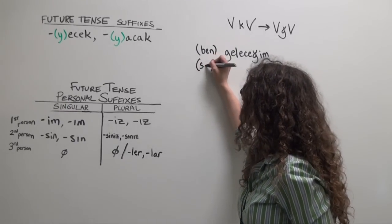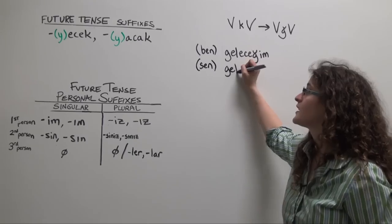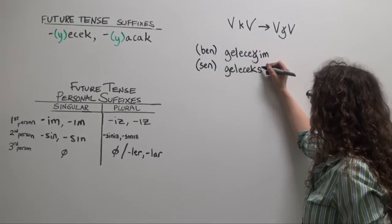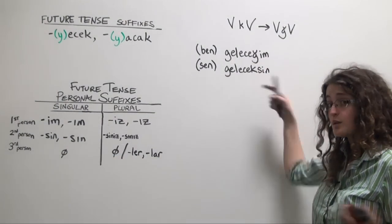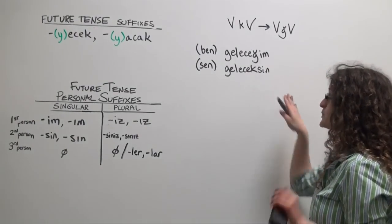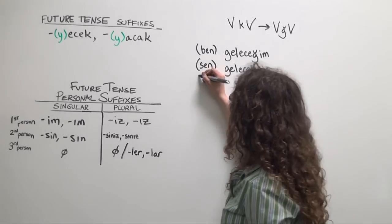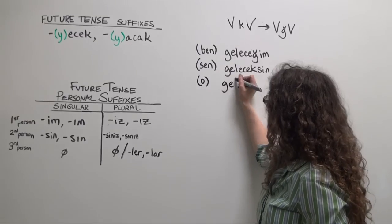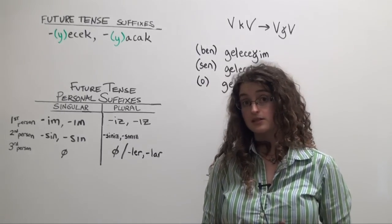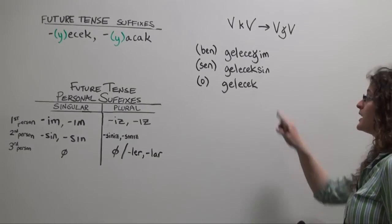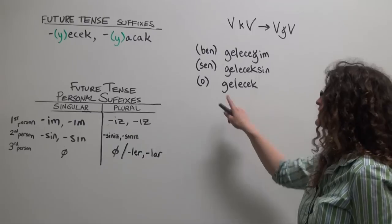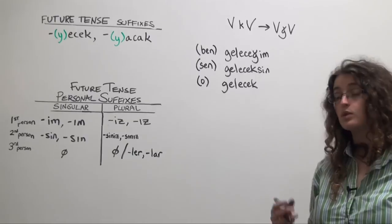Moving on. Sen gel ecek sin. Now do we have to change this k? We don't, because it's not between two vowels. It's got a consonant on its other side, so we'll let this be. Sen geleceksen. You will come. O gel ecek. And we don't have a third person singular personal suffix we need to add, so we'll stop there. This k can of course stay as it is because there is no vowel on the other side. There's no letter on the other side. So o gelecek. He or she or it will come.